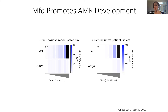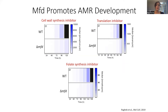The next question was: is this specific to rifampicin? Just to remind you, rifampicin inhibits RNA polymerase initiation. We thought maybe this is specific to RNA polymerase and MFD's interaction with RNA polymerase, so we moved on to other antibiotics — cell wall synthesis inhibitors, translation inhibitors, and a folate synthesis inhibitor — completely different classes. We see the same exact result: without MFD, AMR development is significantly inhibited. It seems to not be specific to the class of antibiotic or the species — this is a conserved phenomenon.